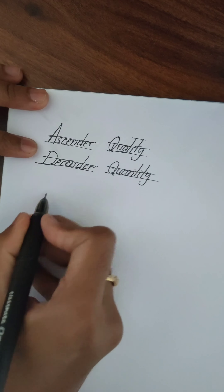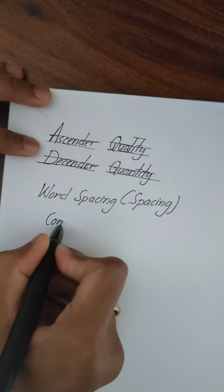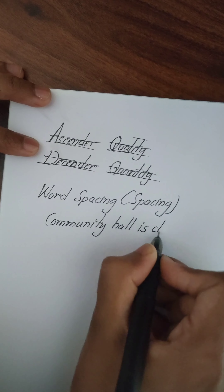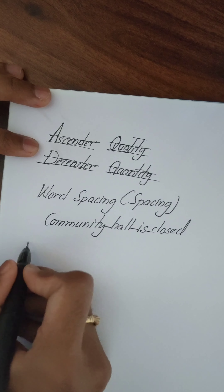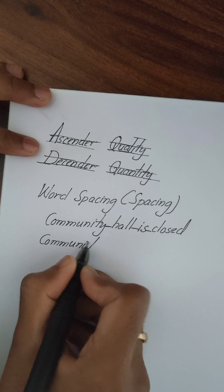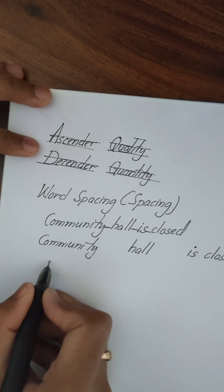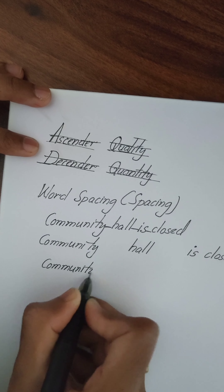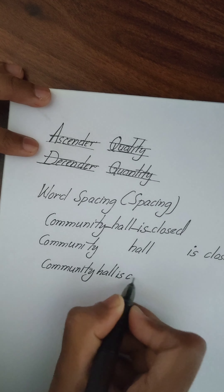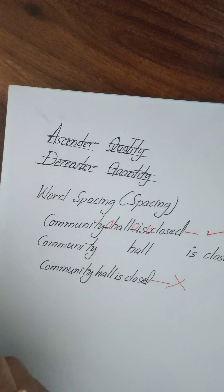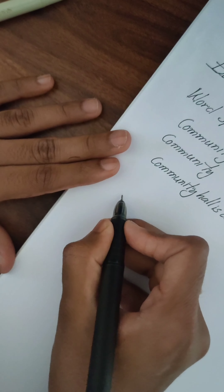Word spacing and letter spacing. When we write, we should give even spacing between words — we should not give more or less than normal. For example, the sentence 'Community hall is closed': the second sentence has more space between words and the third has less. We should not write like that. In the first one we have even spacing between words.